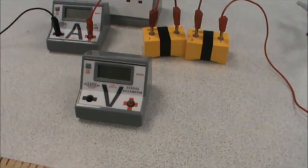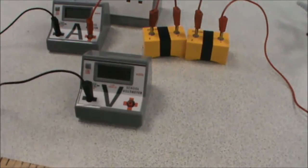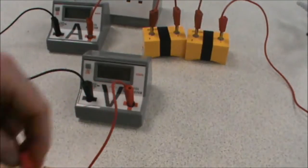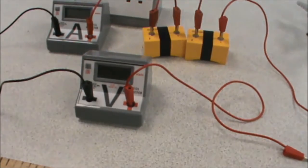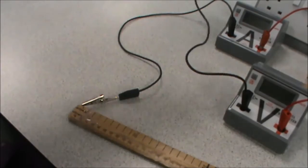Our voltmeter is connected in parallel to the two crocodile clips by plugging into the back of the sockets on the crocodile clips, like so.